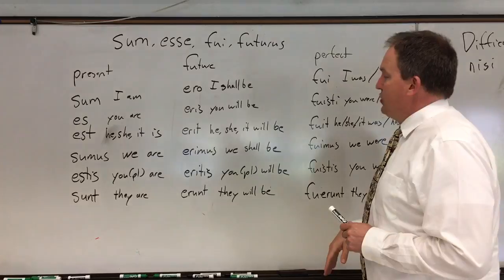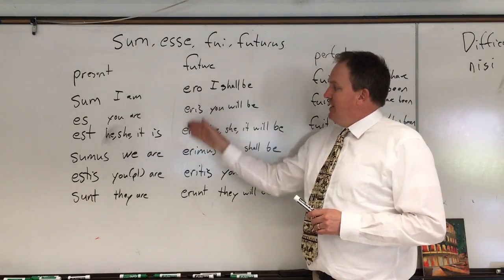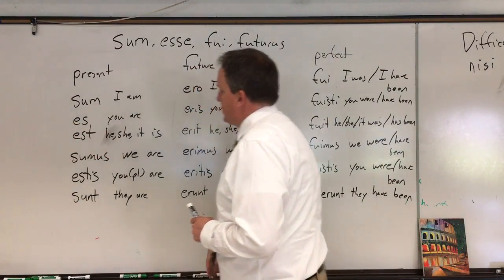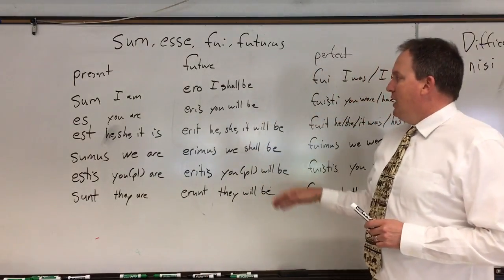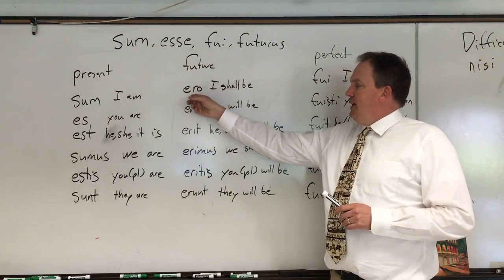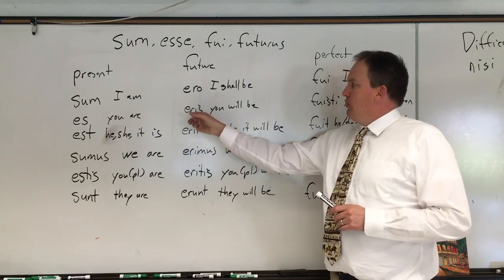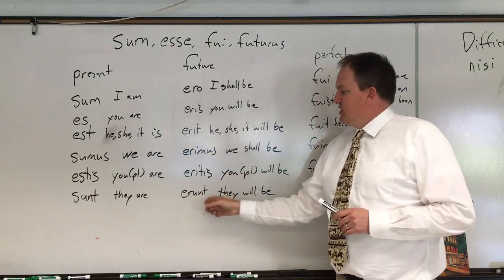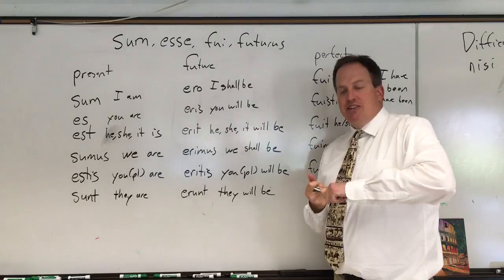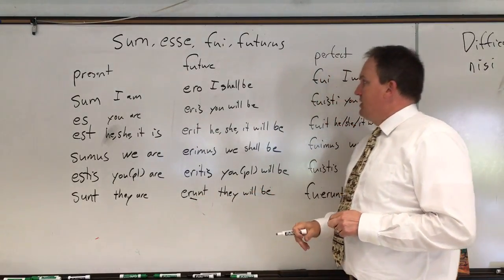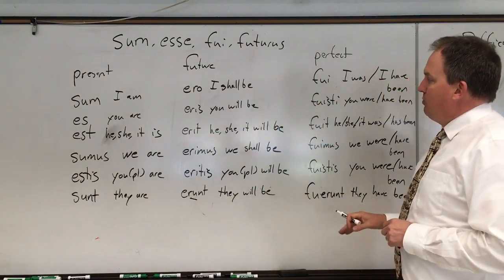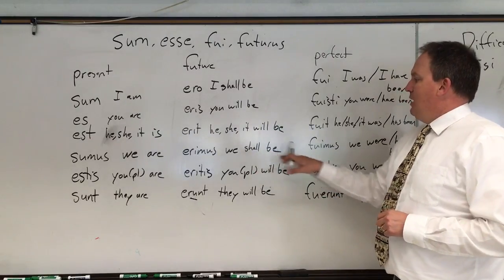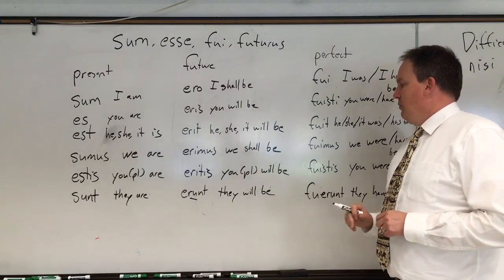The future of sum doesn't look like it. It still has the e, which you see in some of the forms of sum, but then it goes r-e-r-o: ero, eris, erit, erimus, eritis, erunt. Make sure you have it down as a u there. I shall be, you will be, he/she/it will be, we shall be, you will be, they will be.